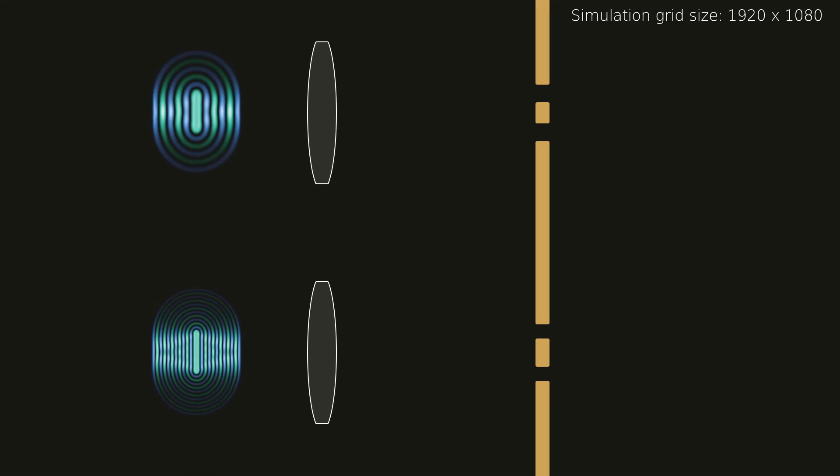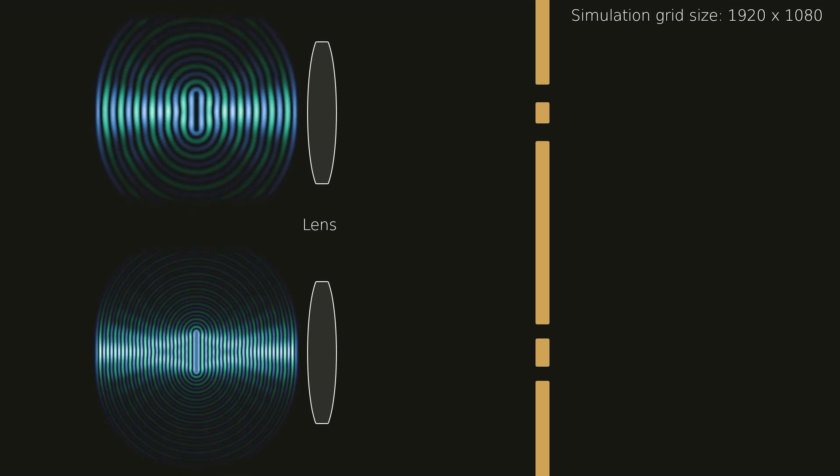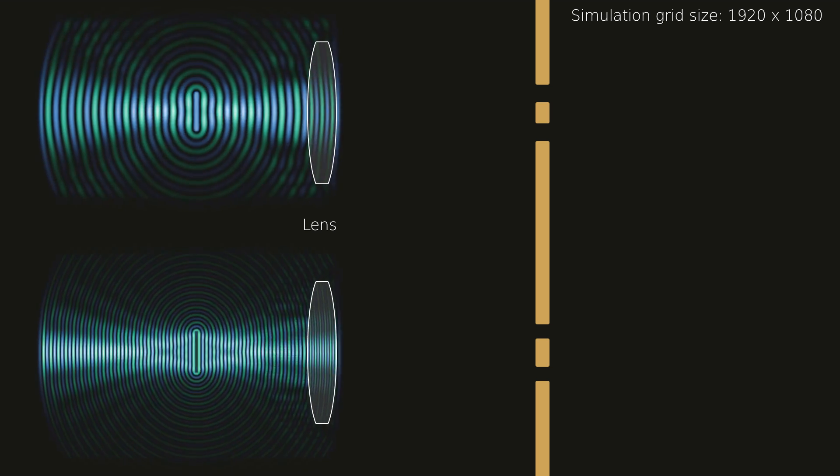A small demo you see here features two light sources with different wavelengths. The refractive index can be adjusted for each simulation grid point to create lenses, prisms or fibers.